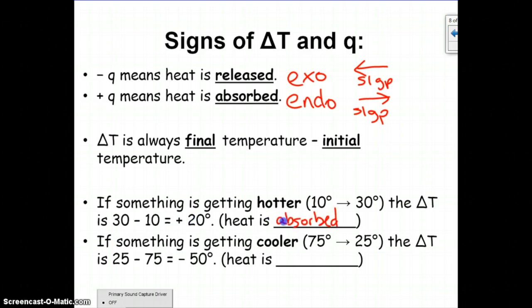That's endothermic. If something is getting cooler, going from 75 to 25 degrees, the delta T is going to be 25 minus 75, so negative 50, which means heat is released.